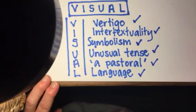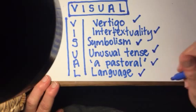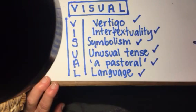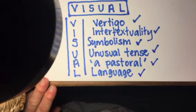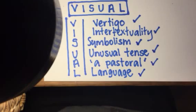So: Visual — Vertigo, Intertextuality, Symbolism, Unusual Tense, A Pastoral, Language. If you can even think up a little song, that can be helpful too. Onwards and upwards as we keep approaching Paper 2.